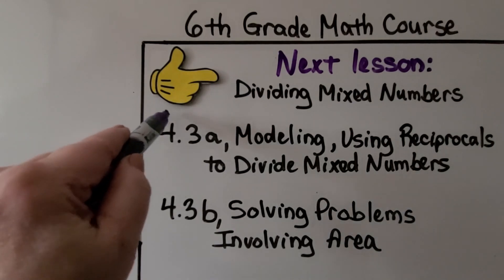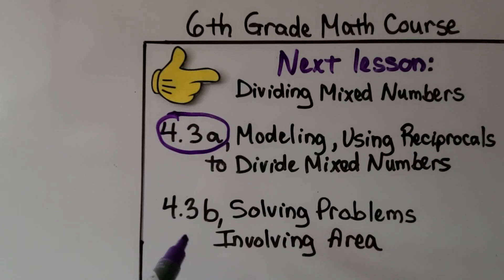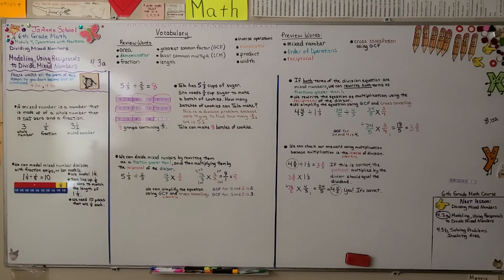So, now we've finished this lesson. We're going to be moving on to 4.3b, the next part of this lesson, where we're going to talk about solving problems involving area. Remember, turn your mixed number into a fraction greater than 1, and remember to flip around that divisor so that when you multiply by the reciprocal, it's written correctly.